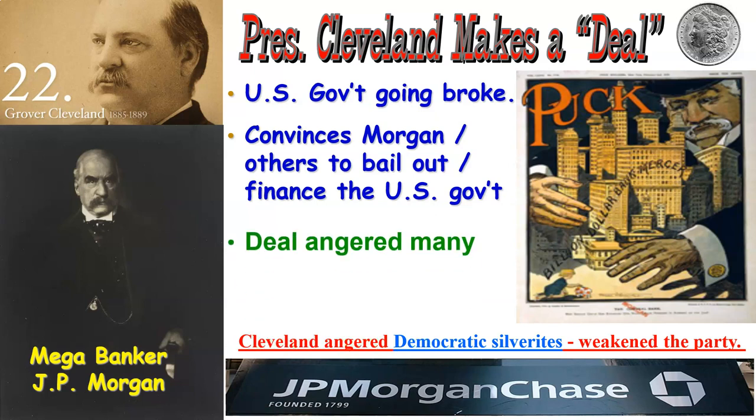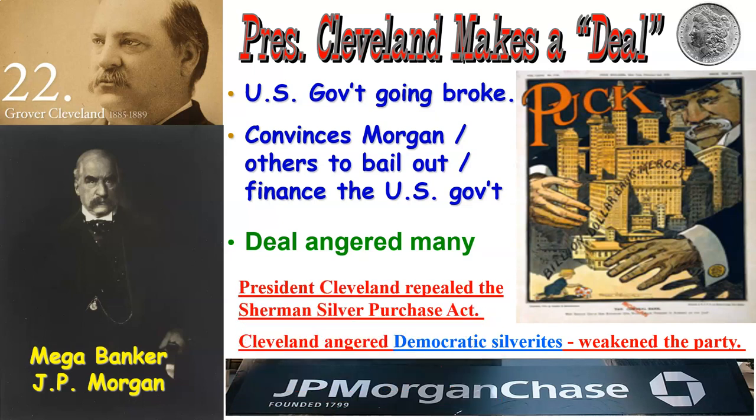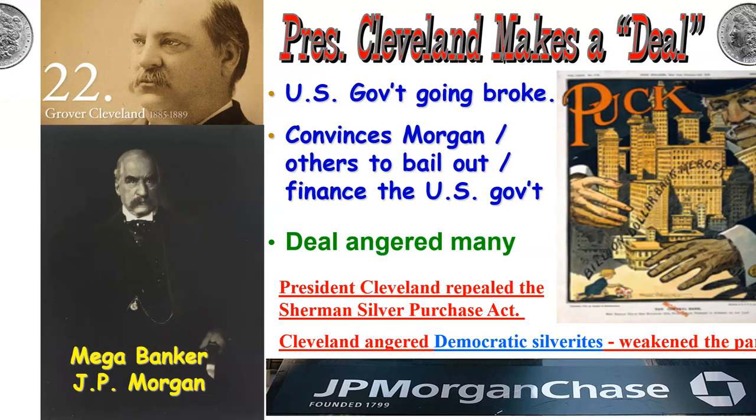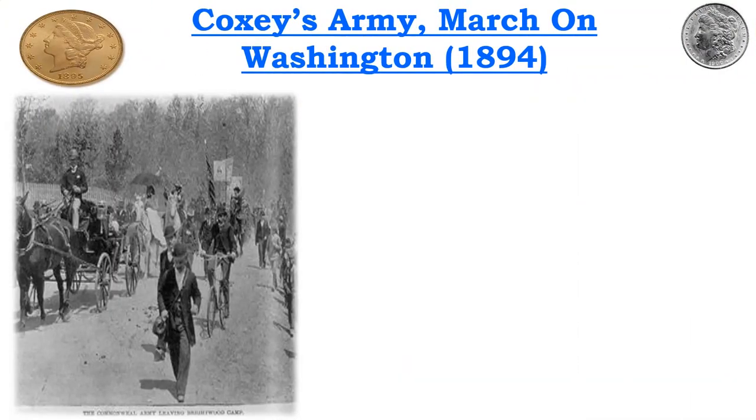The public was absolutely livid at this deal, which was seen as a deal with the devil — with the monopolies and the powers that be, more corruption controlled by one big-money person. Cleveland also repealed the Sherman Silver Purchase Act, which shrunk the money supply and of course made the depression even worse.